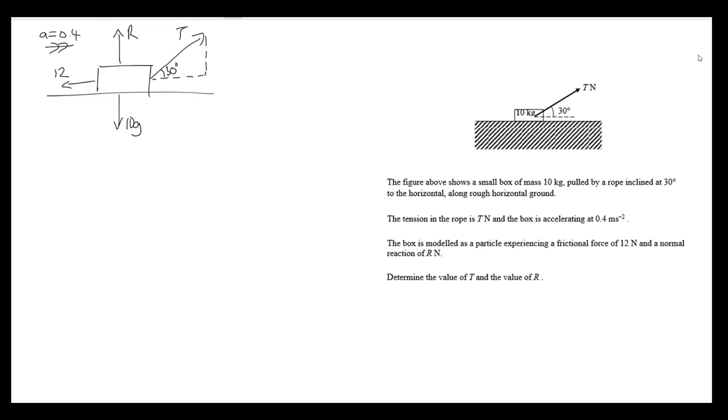The question asks us to determine the values of t and r, so we have enough information to set up equations which we can solve. First, I want to annotate these components, the horizontal and vertical. Moving to the right and moving up, we have t cosine 30 for the horizontal and t sine 30 for the vertical.